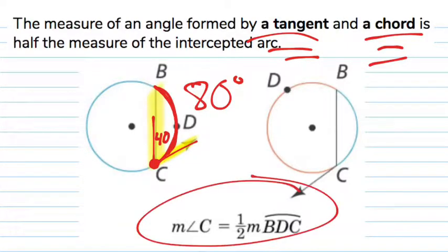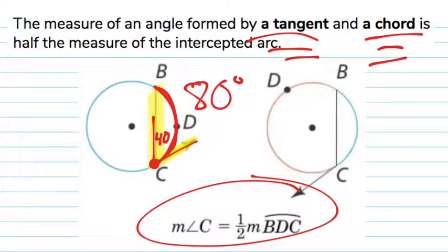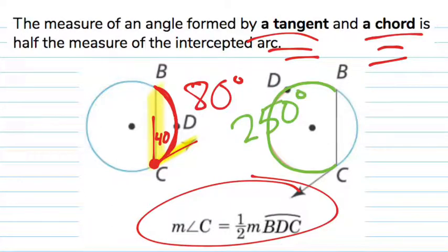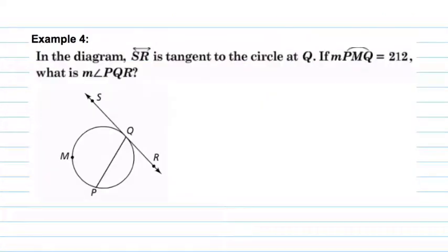It's pretty much the same idea as before. The pictures will look a little different — you might see a tangent line, or sometimes a major arc. The same rule applies. For example, if arc CDB were 250 degrees, then the angle formed by the tangent line and the chord would be half of 250, which is 125 degrees. Let's look at some examples.